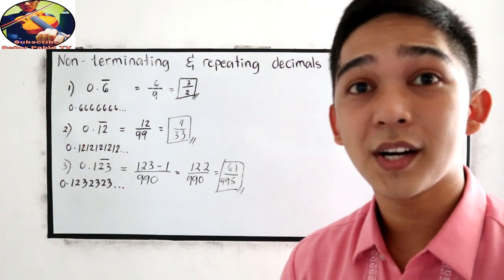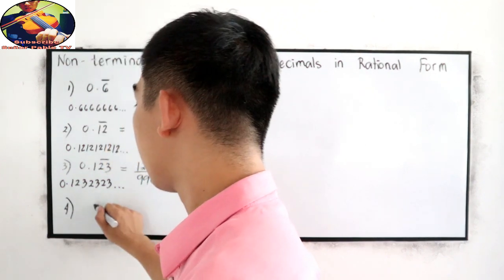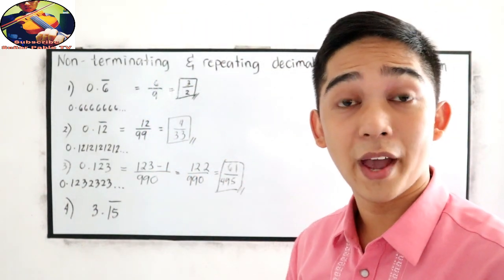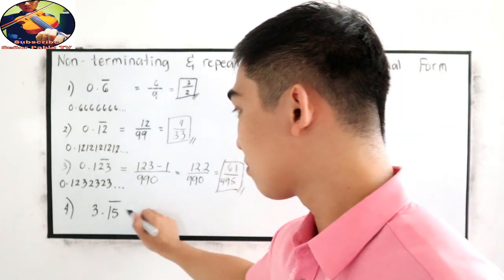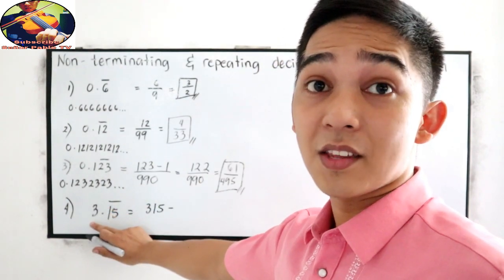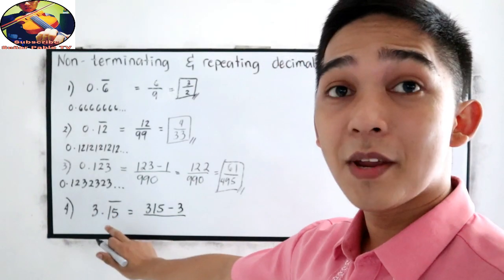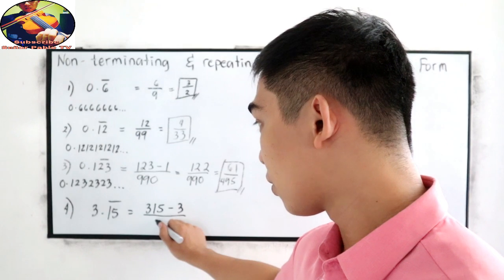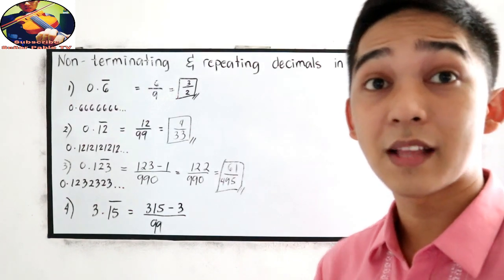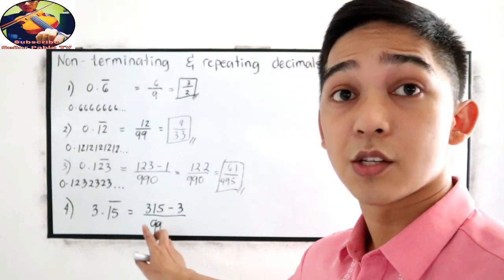Our last case, number 4: 3.15 with the bar on 1 and 5. So copy 315, then subtract 3 since it is not included in the bar. We have 2 decimal places included in the bar, so the denominator is 99. That gives us 315 minus 3 over 99.